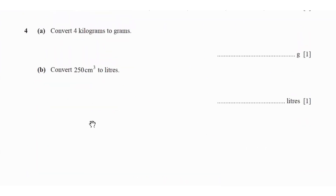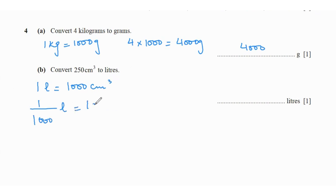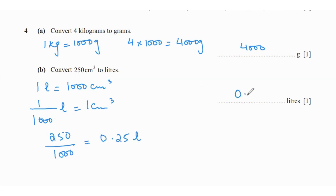Question 4: convert 4 kilograms to grams. Since 1 kilogram is 1000 grams, 4 kilograms is 4 times 1000, which is 4000 grams. Then convert 250 centimetre cubed to litres. Since 1 litre is 1000 cm³, 250 cm³ is 250 divided by 1000, which is 0.25 litres.